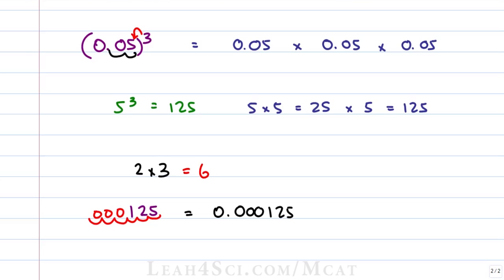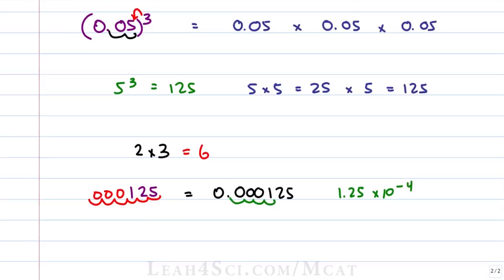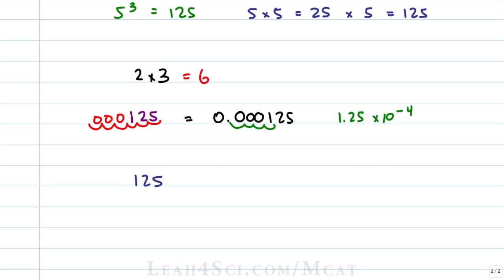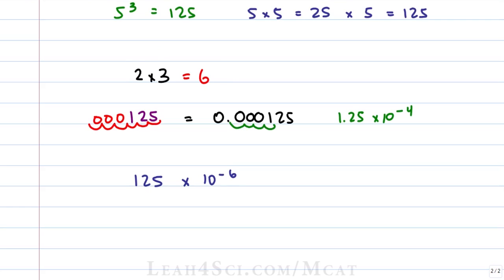Again, you probably want to put this into scientific notation, which would be 1.25 times 10 to the minus one, two, three, four. Or the faster way is to say we have 125 times 10 to the minus 6, which is what we got when we figured out how many decimal spaces to move back. But this is not proper scientific notation, so we'll move the decimal back 2 spaces — divide by 100 — and raise the exponent by 2, giving us 1.25 times 10 to the minus 4, which we already predicted.